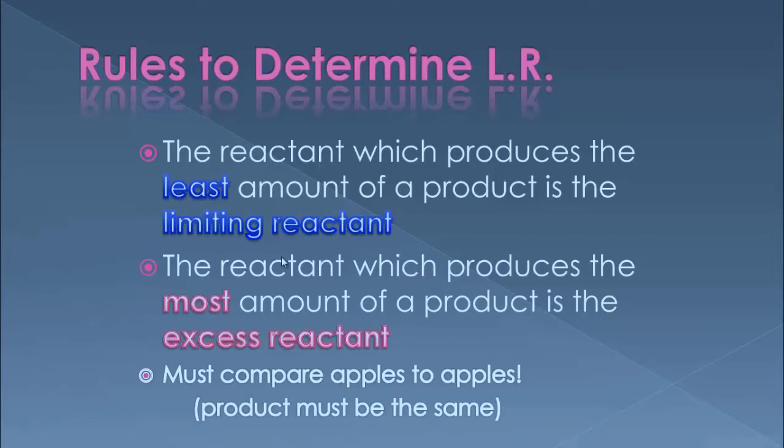You must always compare apples to apples — you must pick the same product that you're going to convert both reactants to. You can't change one reactant to the first product and the second reactant to the second product, because their ratios may be different. So we are always going to compare them to the same product.